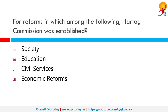For reforms in which among the following was the Hartog Commission established? The correct answer is education. The committee was appointed to survey the growth of education in British India. In 1929, the committee submitted its report. The Hartog committee concentrated its attention more on primary and secondary education and less on university education, though it gave some important suggestions for the university stage as well.